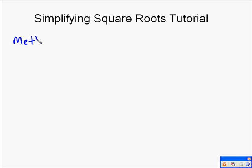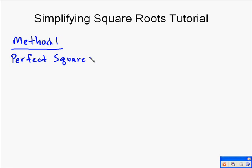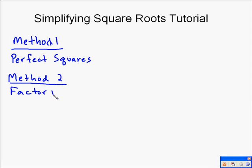This tutorial covers how to simplify square roots using the prime factorization method. There are a couple of different methods — one is the perfect square method, which we've covered in another video, and the other is the prime factorization method, which we're going to call the factor method. The perfect square method gives a better conceptual understanding, but it's not as reliable as the factor method, which is what we're going to do today.